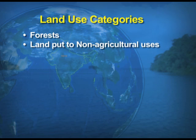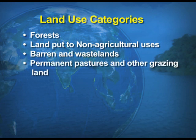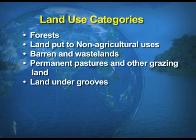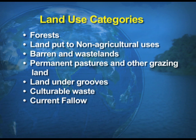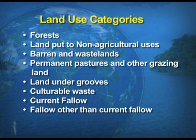The different land use categories are: forests, land put to non-agricultural uses, barren and wastelands, permanent pastures and other grazing land, land under groves, culturable wasteland, current fallow, fallow other than current fallow, and the net area sown. We will be taking up all these categories one by one.